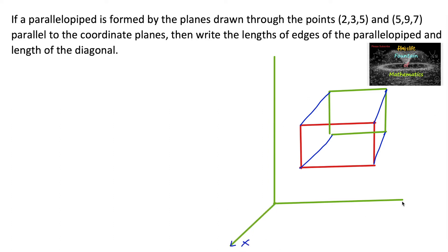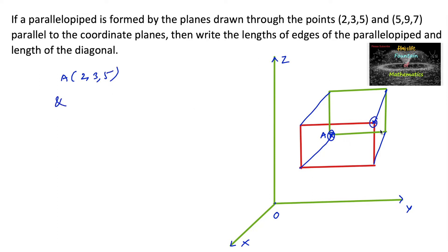In the coordinate system, this is the x-axis, y-axis, and z-axis with the origin. The two points are given on different opposite parallel planes. Let us consider point A as (2, 3, 5) and point B on the opposite plane as (5, 9, 7).